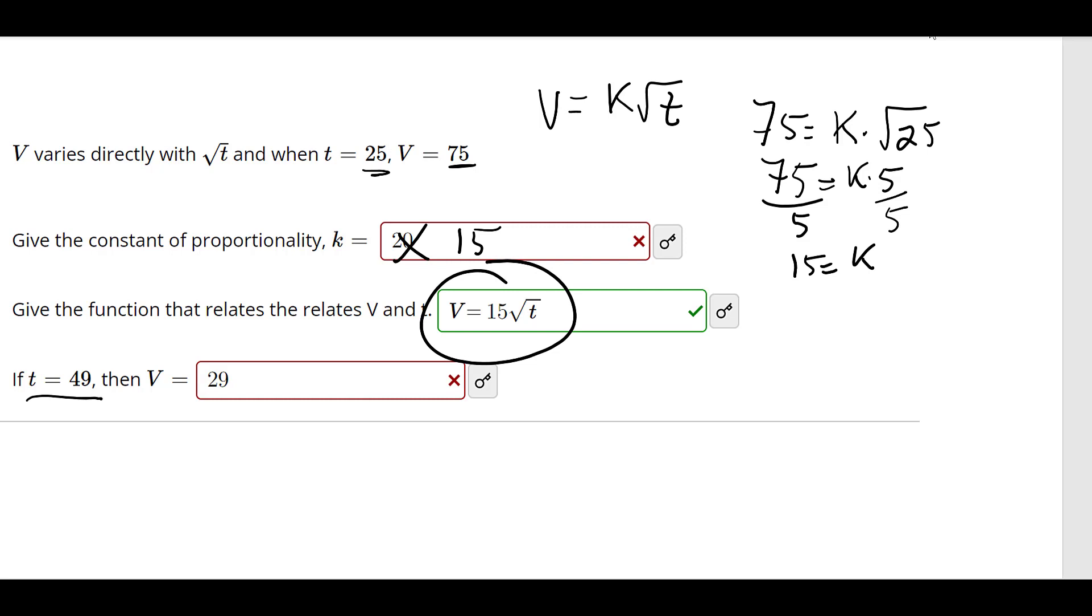And so it says if t is 49, then what is V? So V would be 15 times the square root of 49. That's 15 times 7, which is...